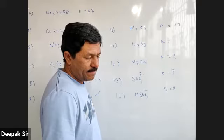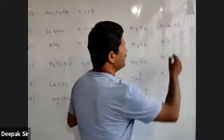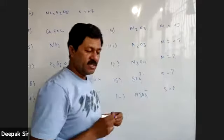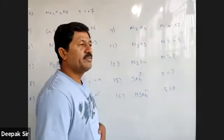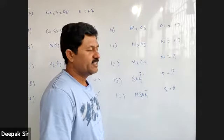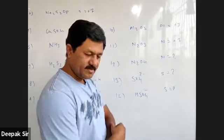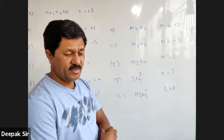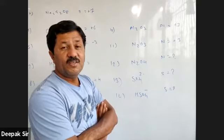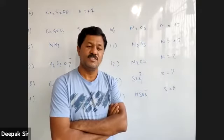One student answers: it is plus three because oxygen is negative and the compound is neutral, so nitrogen is plus three. But the doubt remains — being a non-metal, nitrogen should have a negative oxidation state, yet here it is coming plus three. Is plus three justified or should it be minus three?